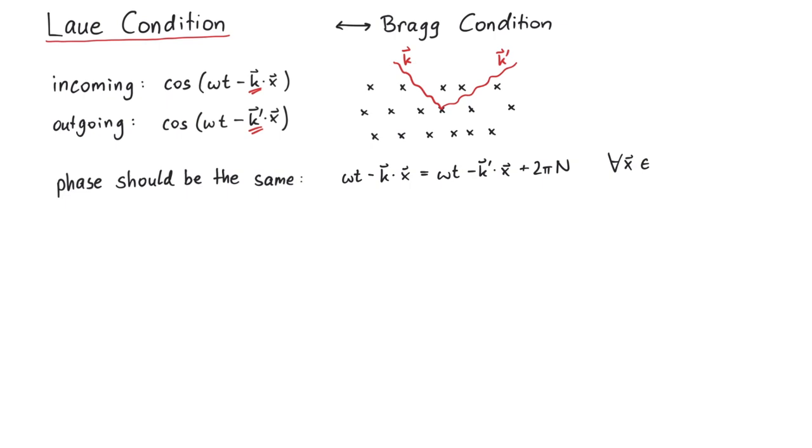And this should be true for any point x in the lattice. If we rearrange this equation a bit, we get the result that k-prime minus k times x has to be equal to 2π times some integer n.